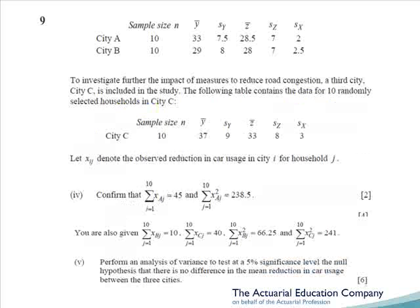For the final parts of the question a third city is introduced, and in part five we'll be comparing the means in all three cities using an ANOVA. But before that we're asked to calculate the sum and the sum of squares for city A. We need to remember that X equals Y minus Z, i.e. the reduction, so x-bar equals y-bar minus z-bar. Once we've got x-bar we rearrange to get the sum of X's. To get the sum of X-squareds we use the sample standard deviation for X, which we're told was 2 for city A. All in all this would have been a fairly nice 21 marks.